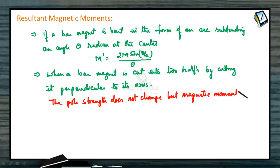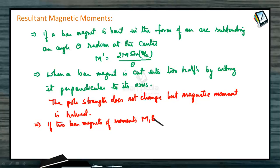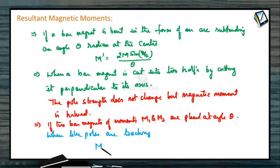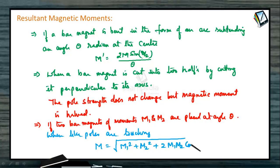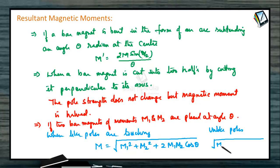If two bar magnets of moments M1 and M2 are placed at an angle theta — when like poles are touching, the resultant magnetic moment will be the square root of M1² + M2² + 2M1·M2·cos(θ). For unlike poles, this will be the square root of M1² + M2² − 2M1·M2·cos(θ).